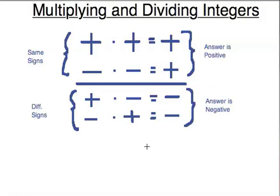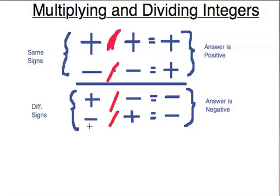These rules actually apply also to division — I can change these to division signs and the rules still apply. A positive divided by a positive is a positive. A negative divided by a negative is a positive. A positive divided by a negative is a negative. A negative divided by a positive is a negative. So if the signs are the same, the answer is positive; if the signs are different, the answer is negative.